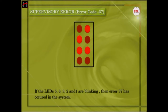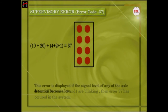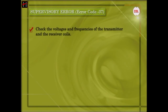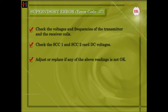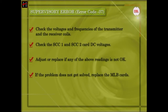Supervisory Error: If LEDs 5, 6, 3, 2, and 1 are blinking, then Error 37 has occurred. This error is generated if signals of any of the axle detectors become low. To rectify: 1. Check the voltages and frequencies of the transmitter and the receiver coils. 2. Check the voltages of SCC1 and SCC2 cards. Adjust or replace if any of the above readings are not found okay. If the problem still persists, replace the MLB cards.